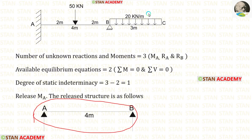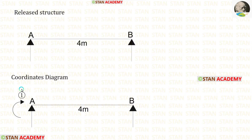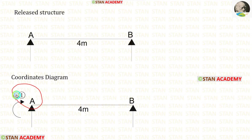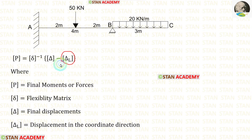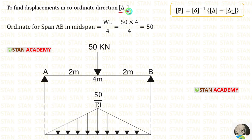In the released structure, there is no need to consider the overhanging span. Now let us make the coordinates diagram. In this analysis, there is only one coordinate at point A, because we have removed MA. Let us see the formula to calculate MA: P matrix equals delta matrix inverse into delta matrix minus delta L matrix. First, let us calculate the delta L matrix, which represents displacement in the coordinate direction. In this analysis, the displacement is the slope.